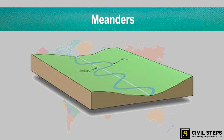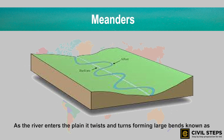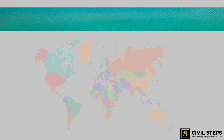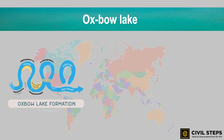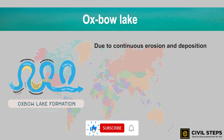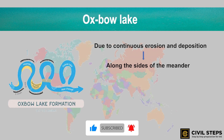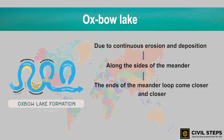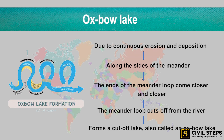Second are meanders. As the river enters the plain, it twists and turns, forming large bends which are known as meanders. Due to continuous erosion and deposition along the sides of the meander, the ends of the meander loop come closer and closer, and in due course of time the meander loop cuts off from the river and forms a cut-off lake, also called an oxbow lake.